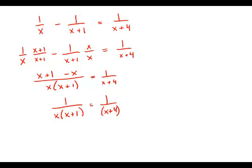Now we have 1 over something on both sides, so we can simply take the reciprocal of both sides. We get x times x plus 1 equals x plus 4.